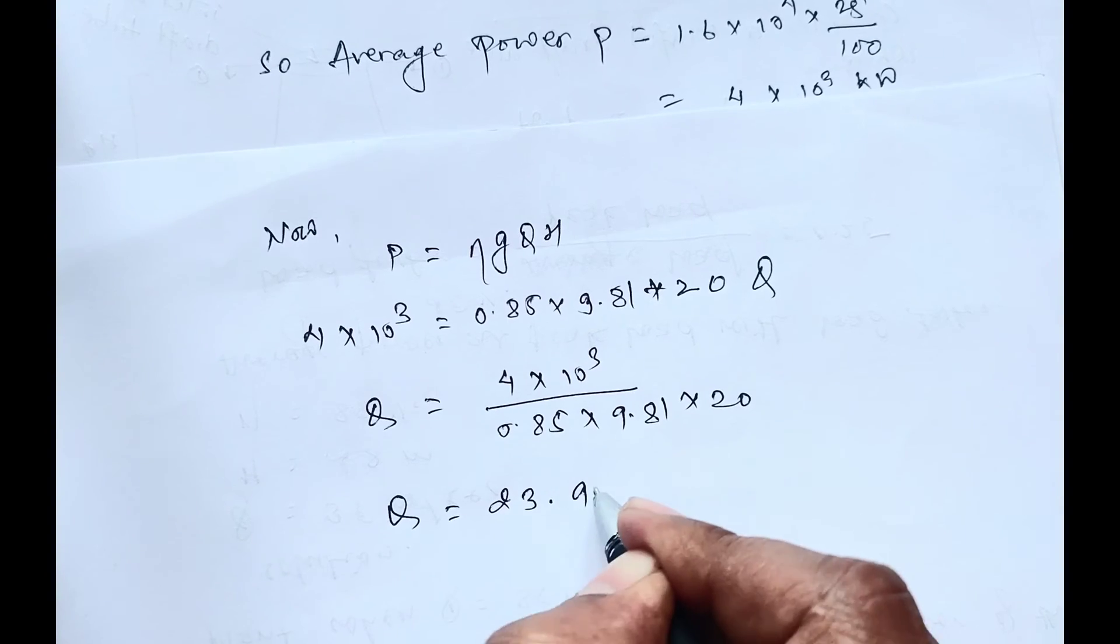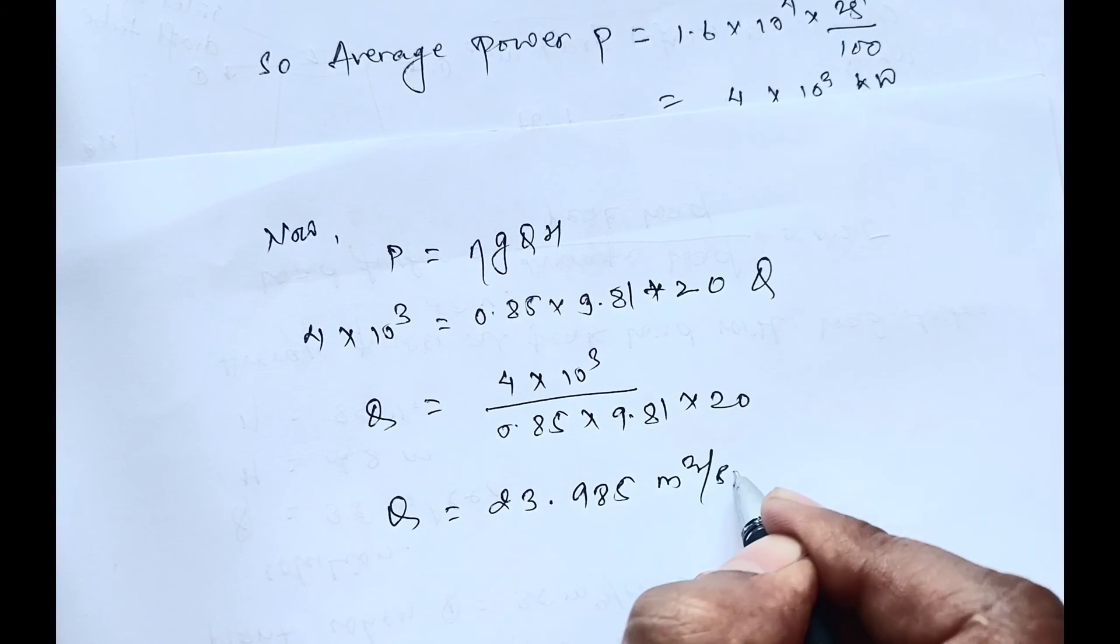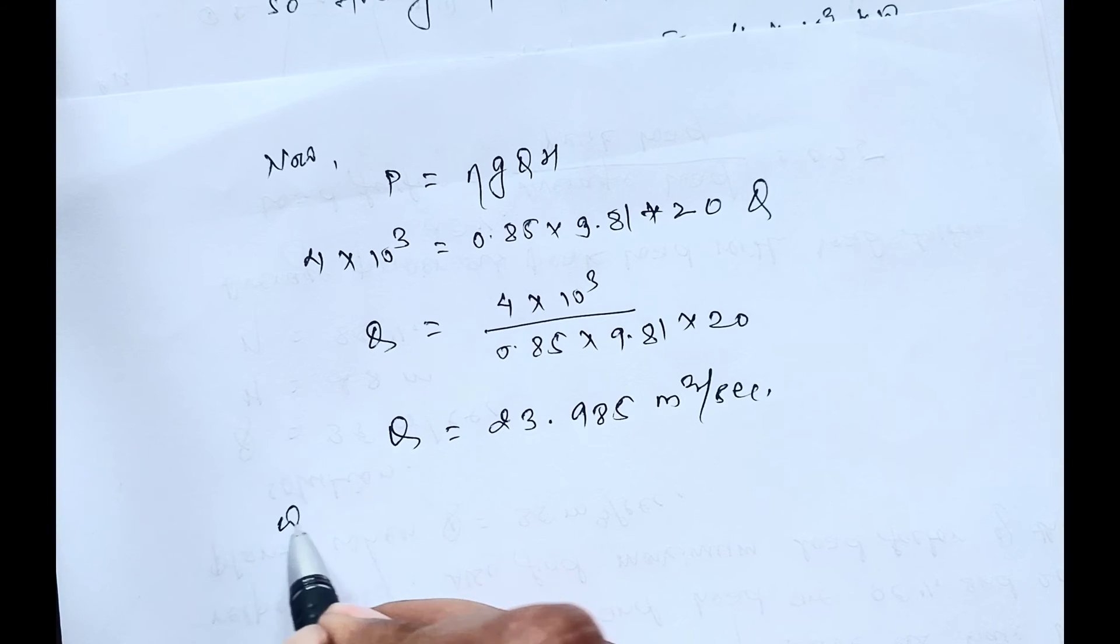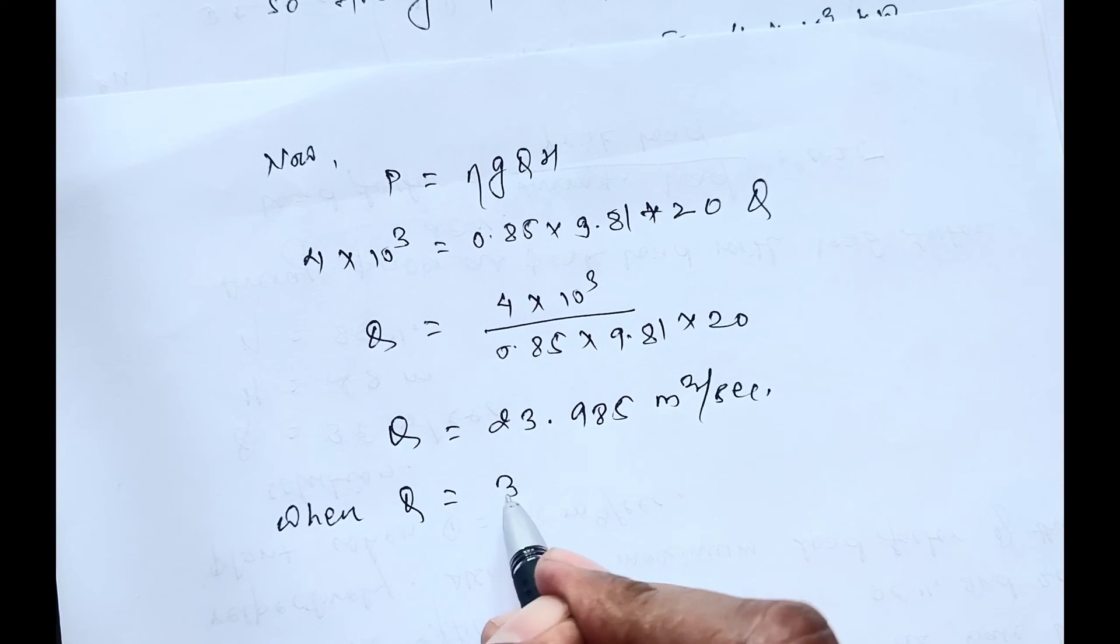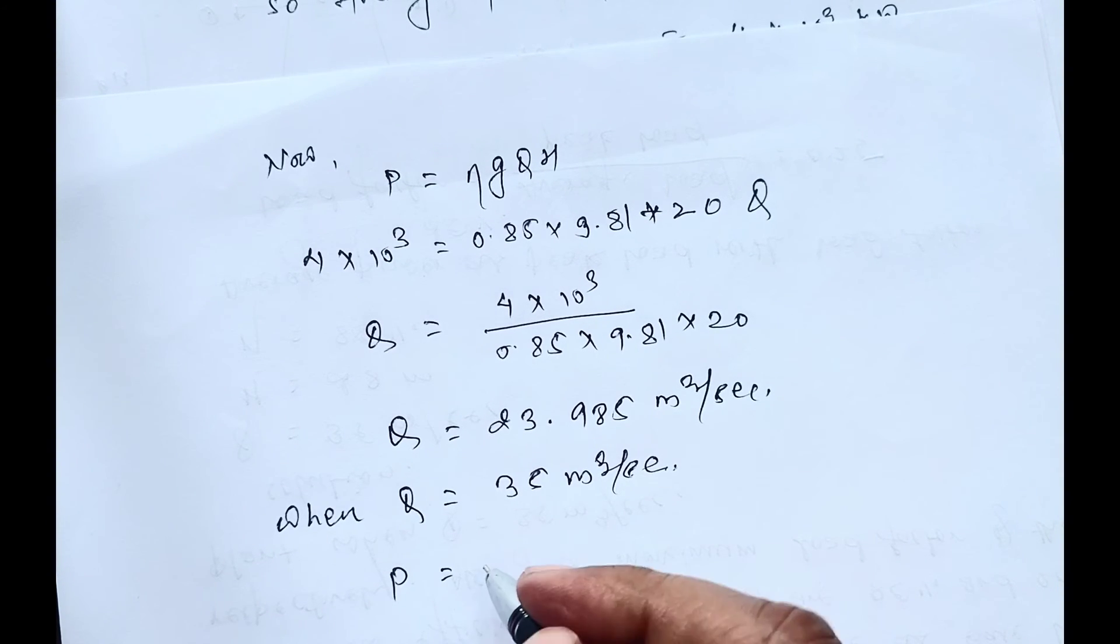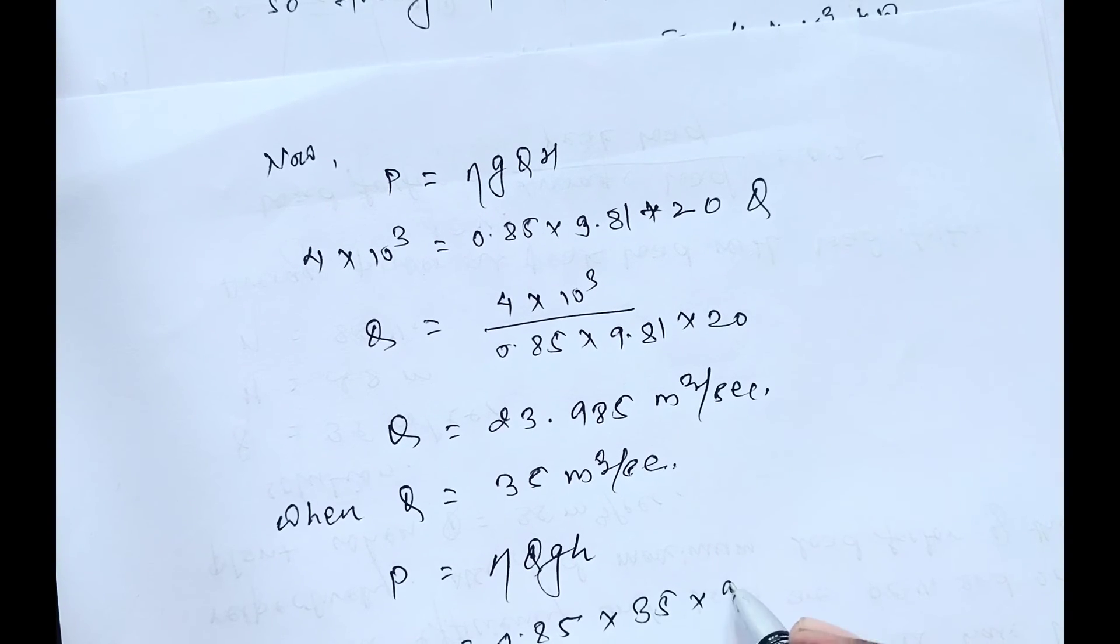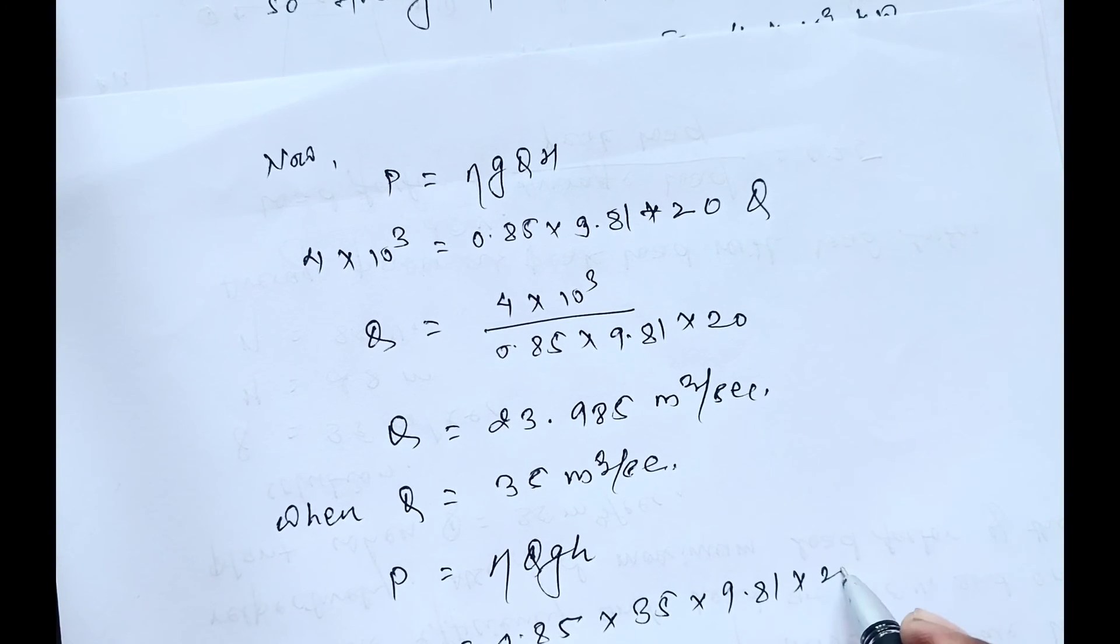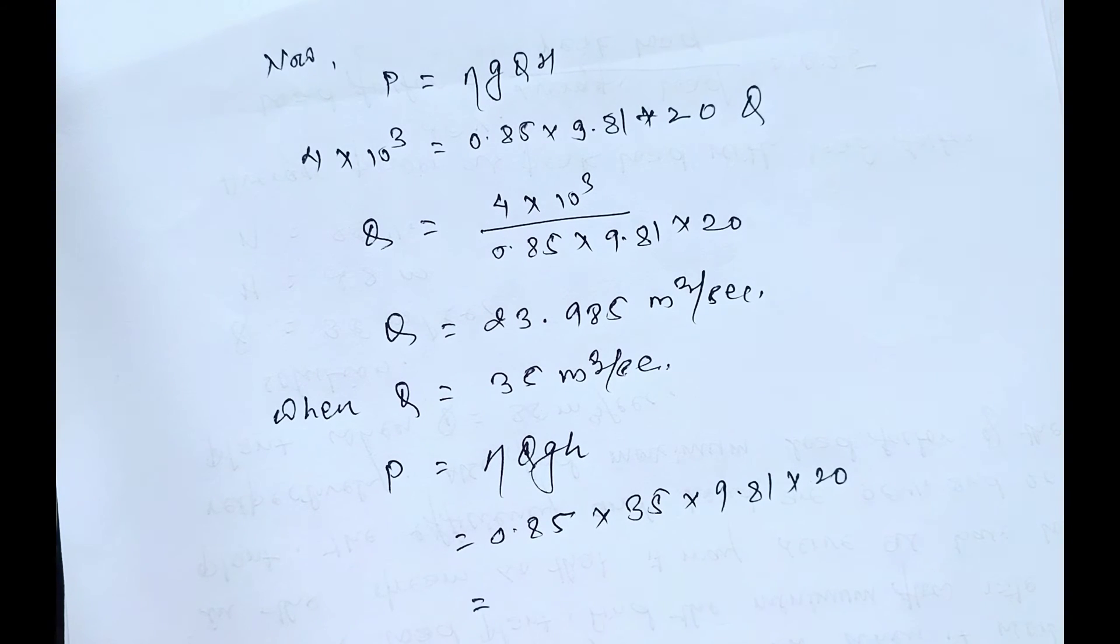Now when Q is 35 m³/s, the value of P will be 0.85 × 35 × 9.81 × 20, which equals 5,836.95 kilowatts.